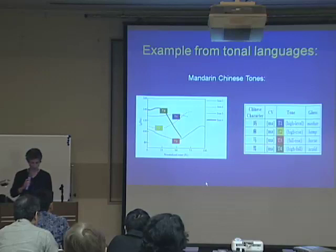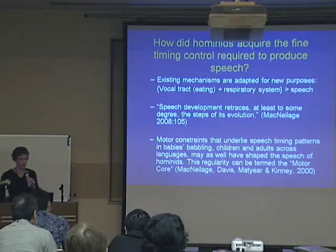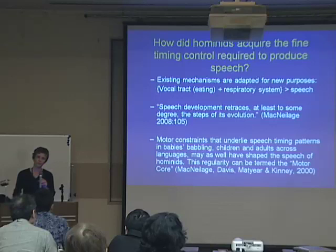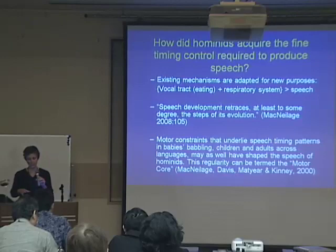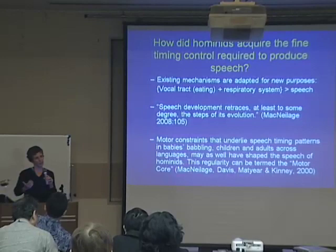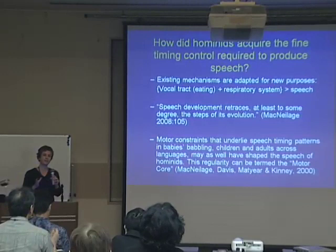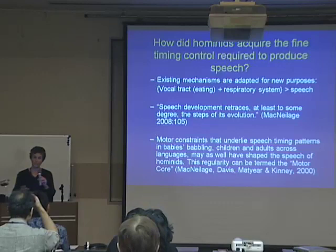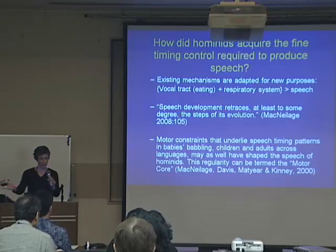Now that we see that timing is important for speech and the functions of the different components, let's ask ourselves: how do babies acquire the fine timing control required to produce speech? We are going to start with the idea that there are some existing mechanisms that are adapted for new purposes — the vocal tract used for eating, the respiratory system for breathing — and we are going to adapt these systems to produce speech. We can think that this problem is faced by babies and by humans in analogous ways. This idea allows us to think that speech development retraces, at least to some degree, the steps of its evolution.